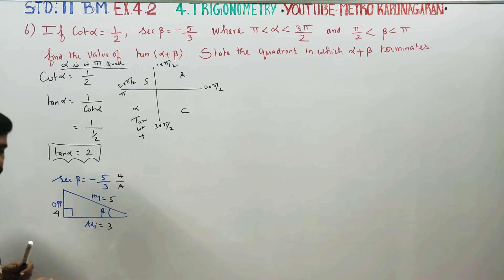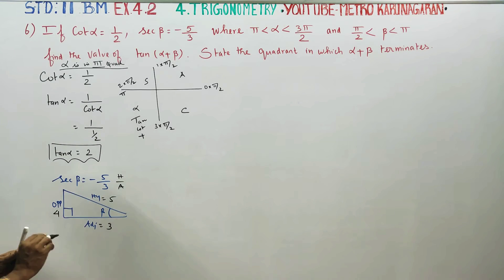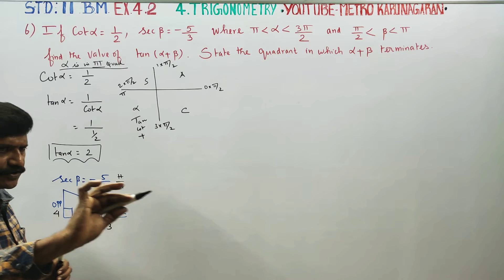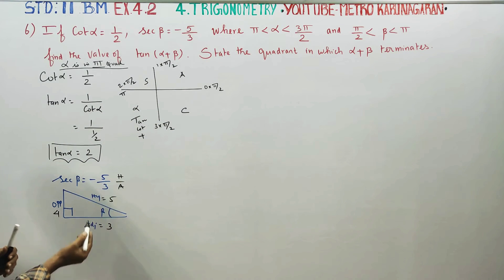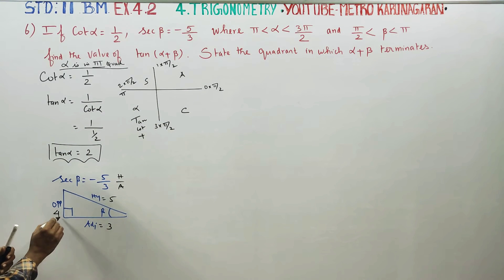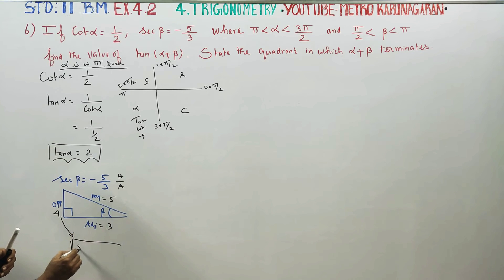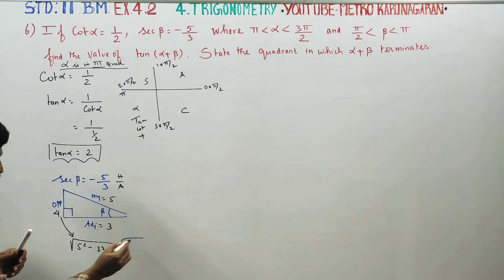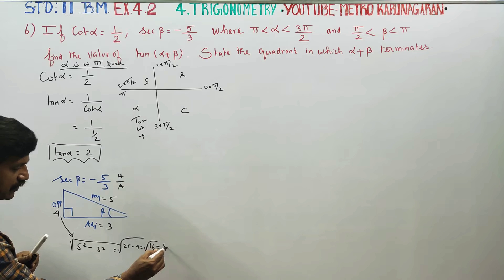Using the Pythagorean theorem with hypotenuse 5 and adjacent 3: the opposite side is the square root of 5 squared minus 3 squared, which is the square root of 25 minus 9, giving the square root of 16, equal to 4. So the sides are 3, 4, and 5.